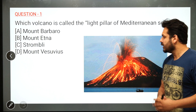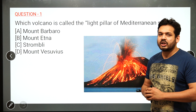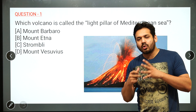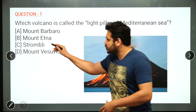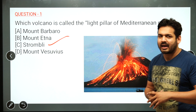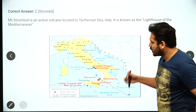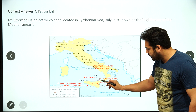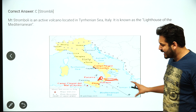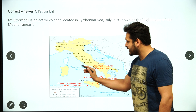These volcanoes are called the lighthouse because they are very active. The answer is Stromboli — Mount Stromboli — which is called the lighthouse or light pillar of the Mediterranean Sea. Looking at the location, this is Italy, and Mount Stromboli is located here in the Mediterranean Sea.